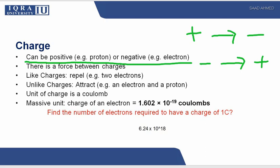Few basics: there is a force between charges, you know it very well. Like charges repel, unlike charges attract. Unit of charge is coulomb. The mass unit charge of an electron is 1.602 times 10 raised to power minus 19 coulombs.